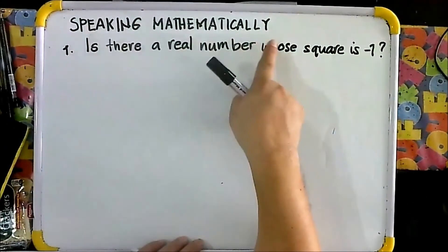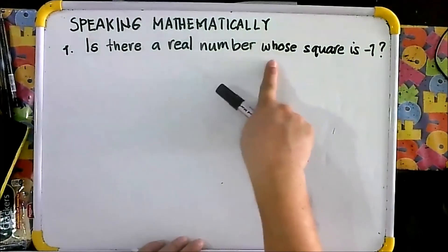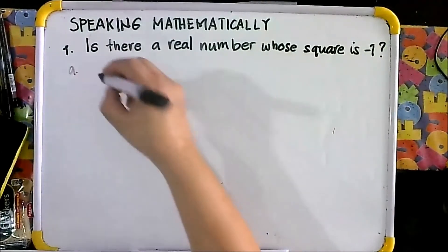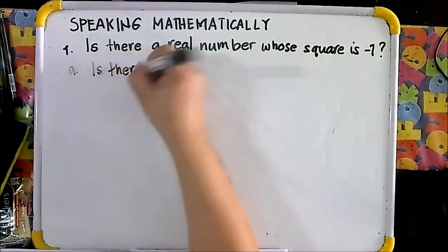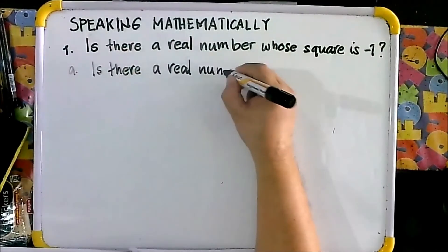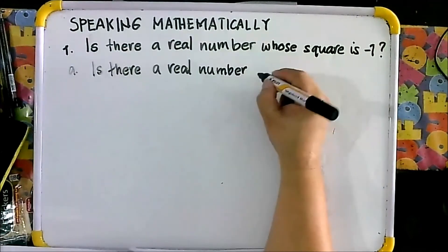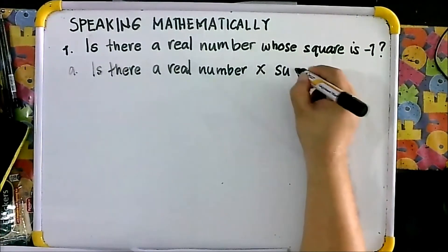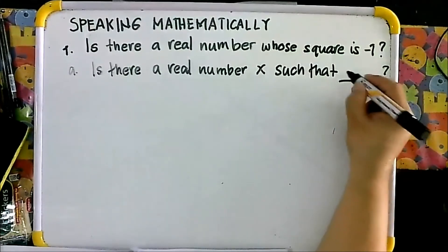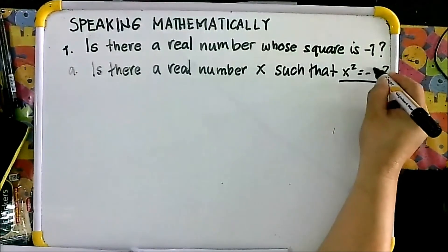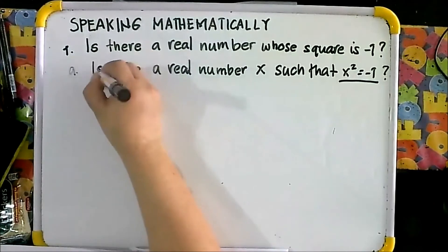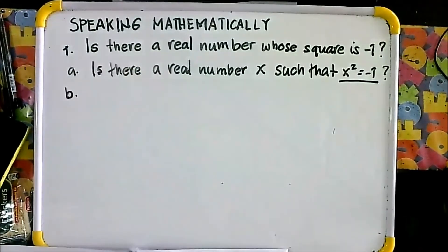Speaking mathematically, for letter A: is there a real number X such that X squared is equal to negative 1? That is your answer.